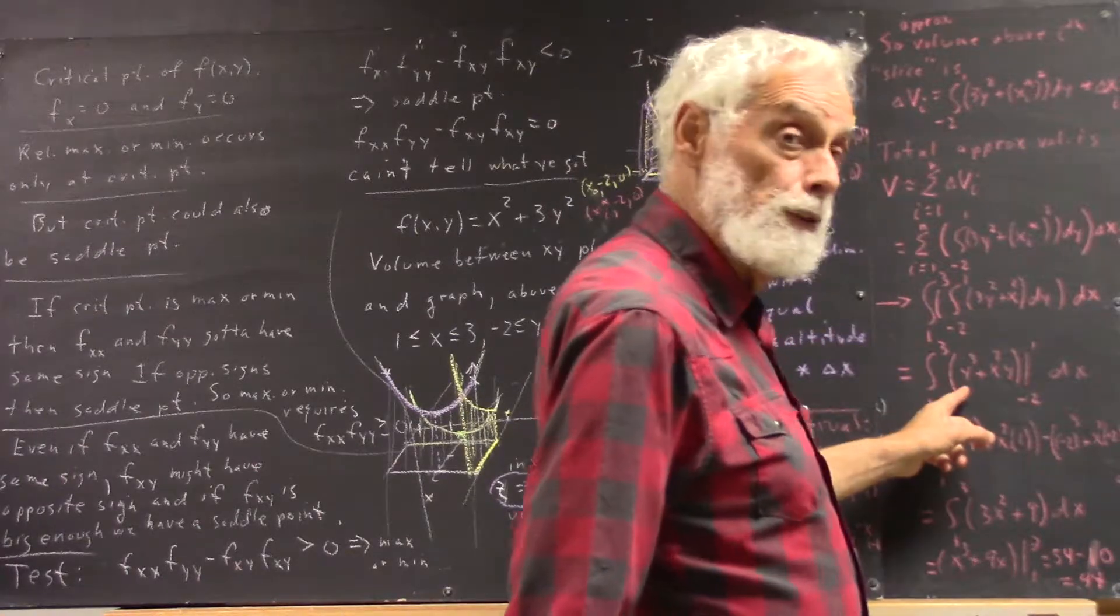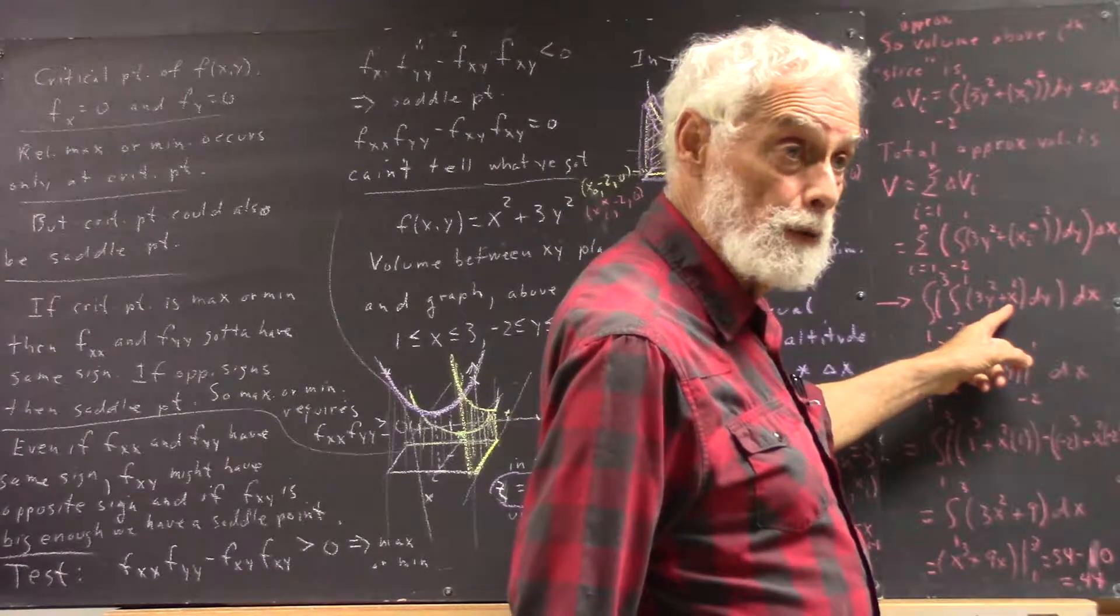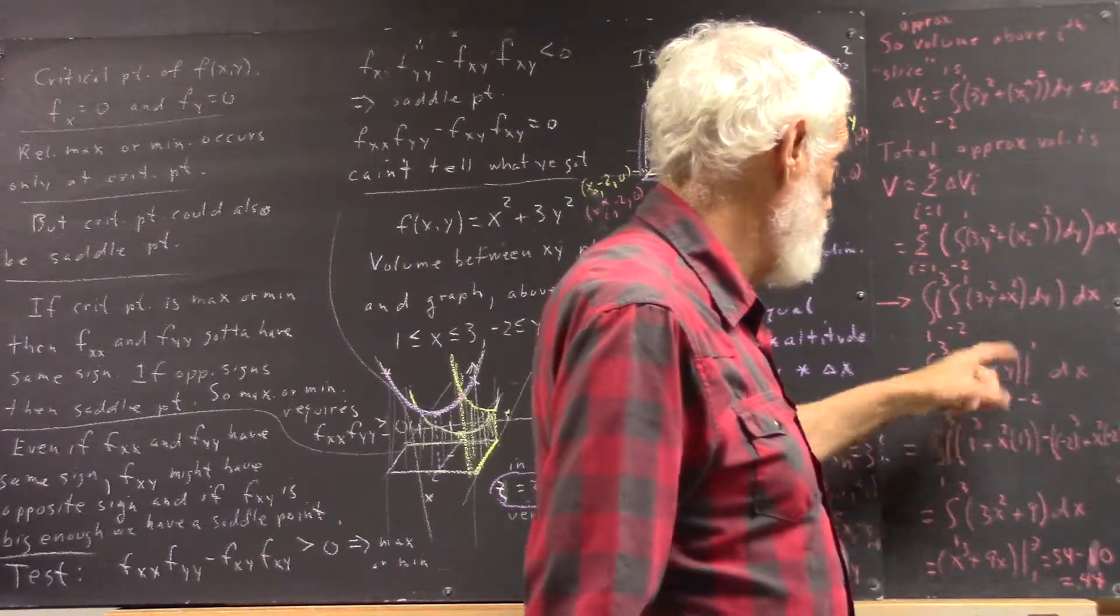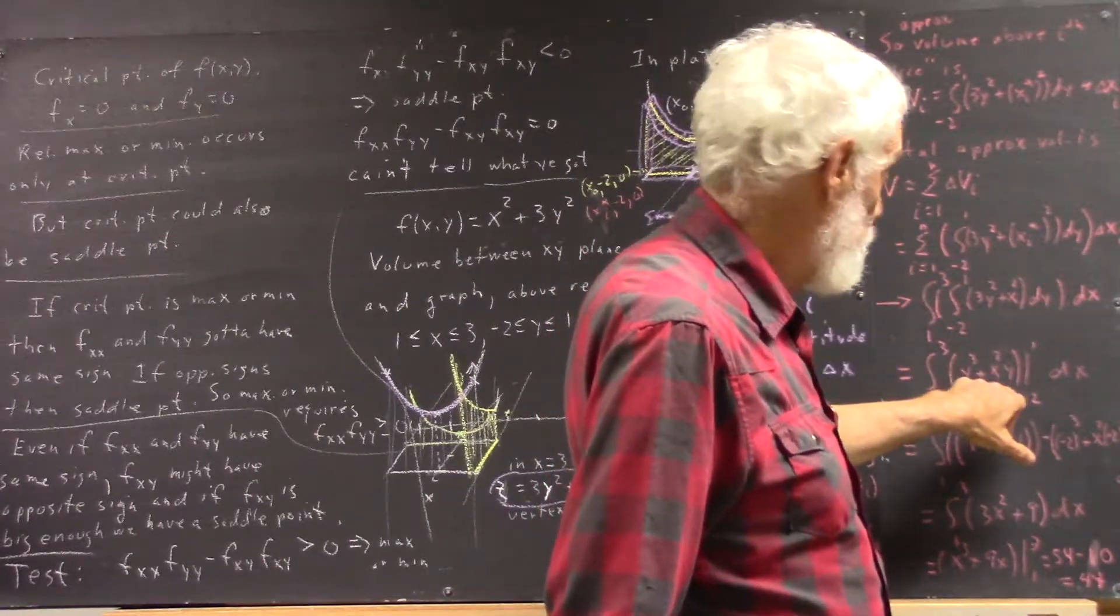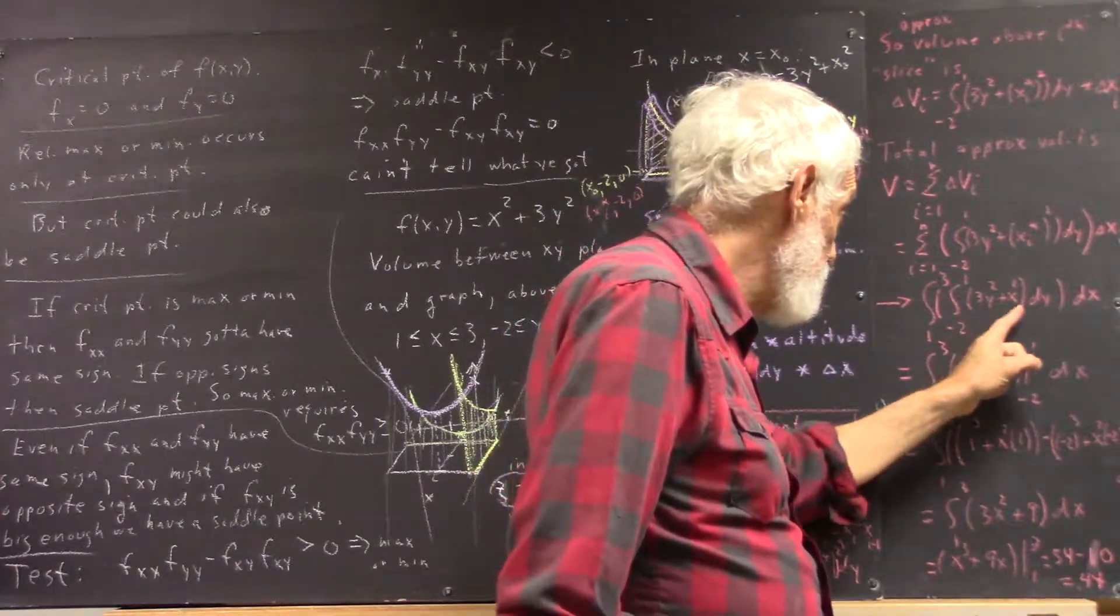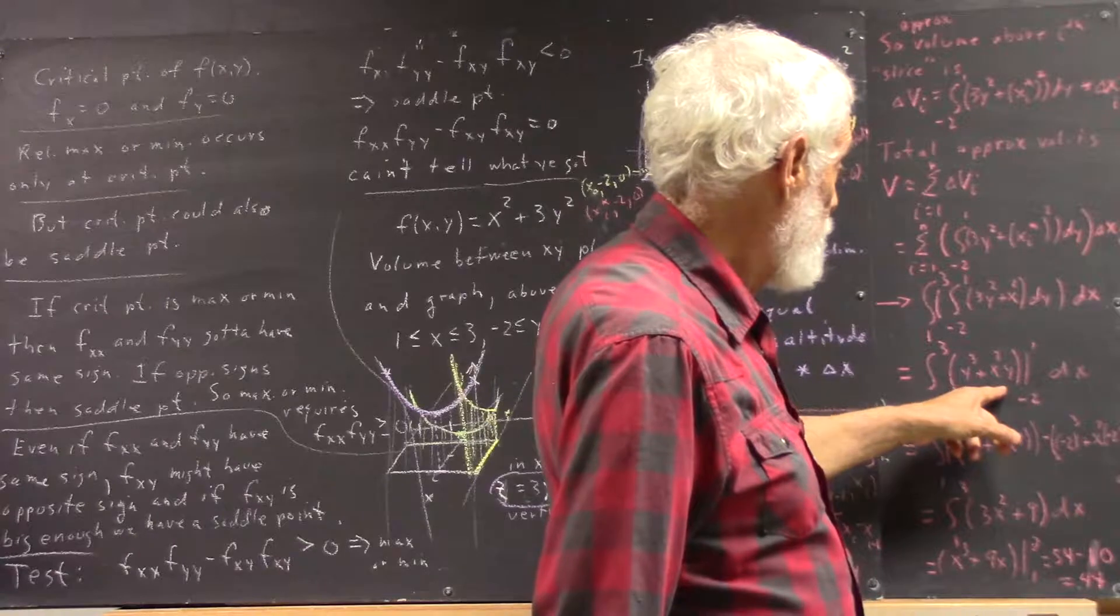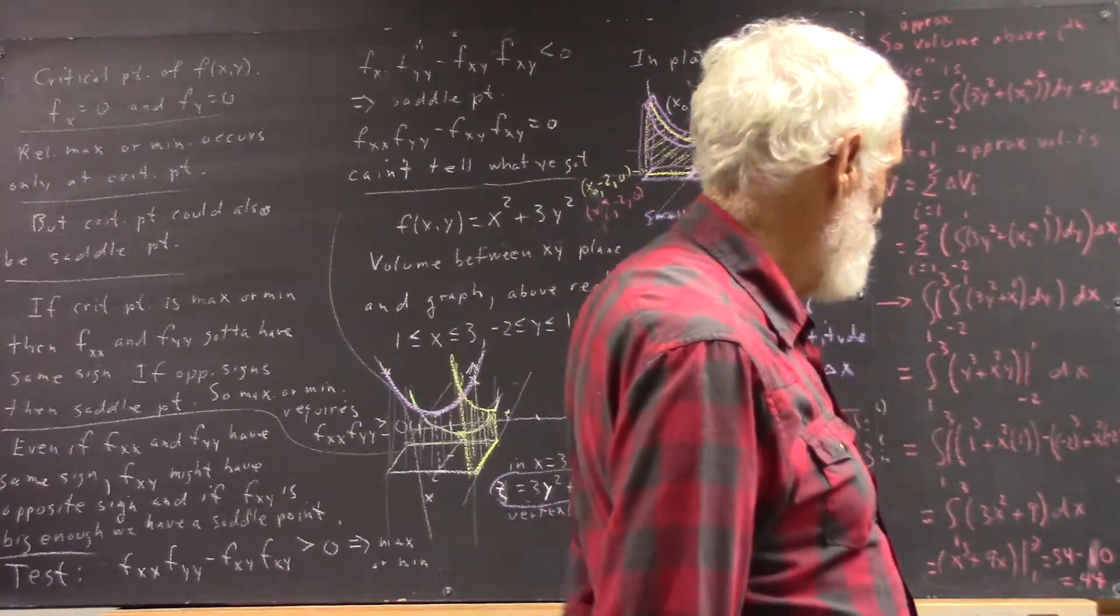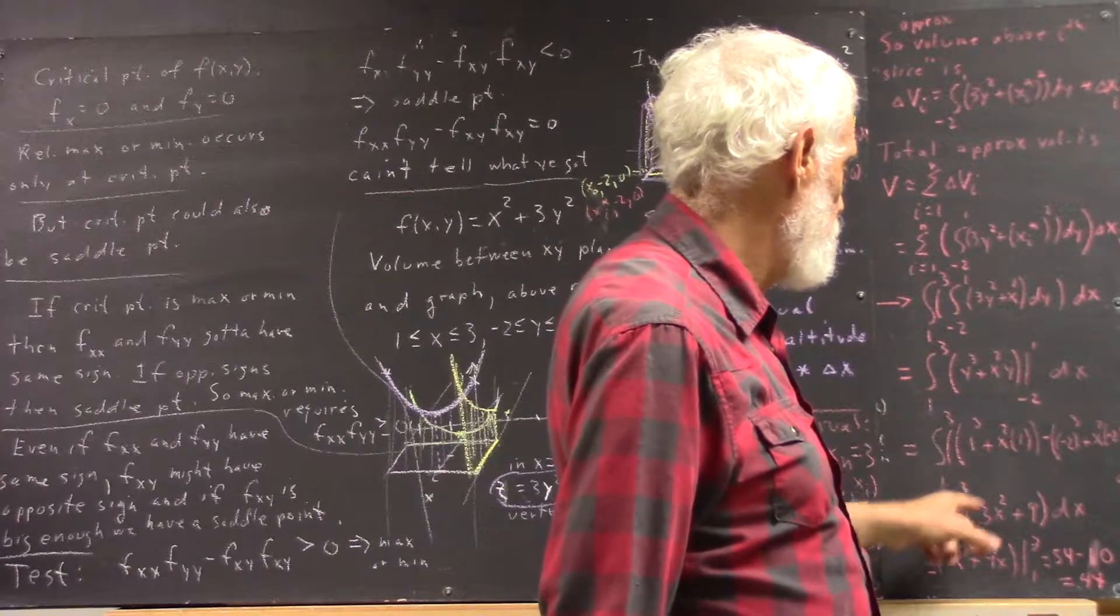So with respect to y, an antiderivative of 3y squared, well that's easy. That's y cubed. And an antiderivative of x squared would be, well, just x squared y. x is a constant. x squared is treated as a constant. And the integral of a constant with respect to y is just that constant multiplied by y. And of course you can verify this by taking the y partial derivative of this expression and you get back to this. So now here's our antiderivative, and that'll be evaluated between the limits negative 2 and 1. And that's very straightforward.